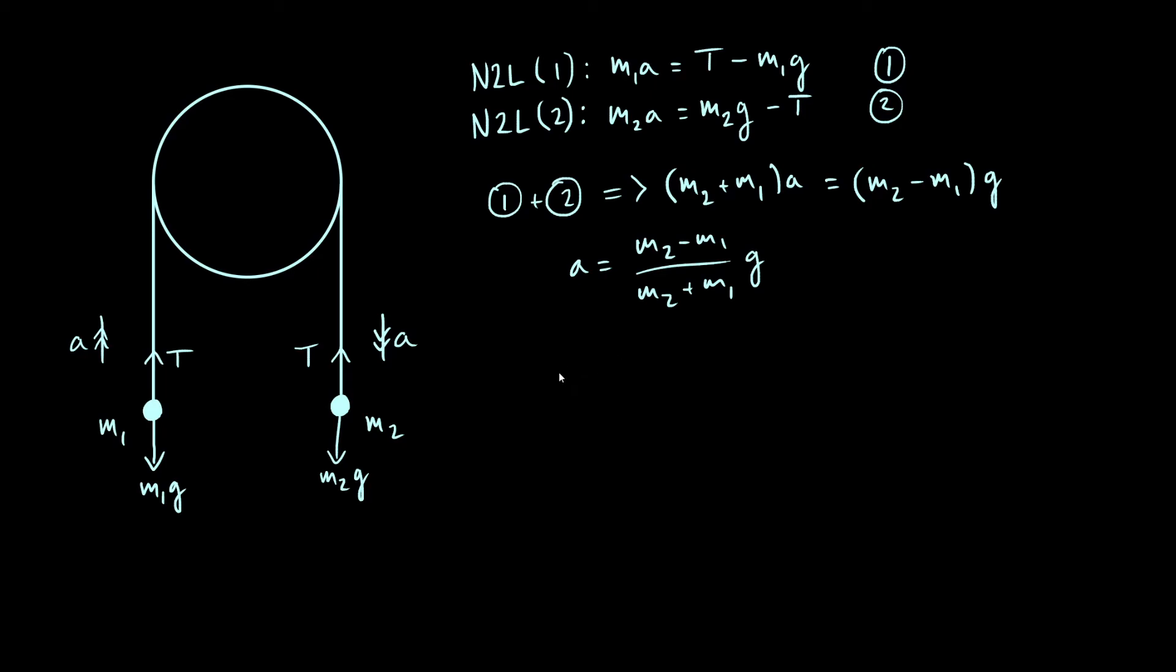Let's also figure out the tension. To figure out the tension, we can use either of these equations, one or two. I'm going to use equation one, and just rearrange this to make T the subject of this equation, and we get T is M1A plus M1G, so that can be factorized as M1 times A plus G.